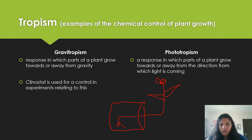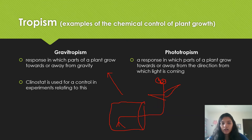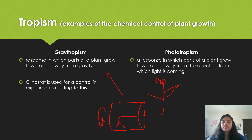For gravitropism, just remember root and shoot. A clinostat is always used as a control for experiments related to this. A clinostat is basically a rotation device — you place the plant sideways and make it rotate in that direction, and this is how it's controlled.